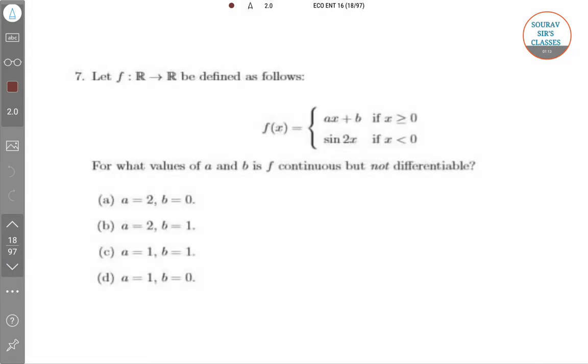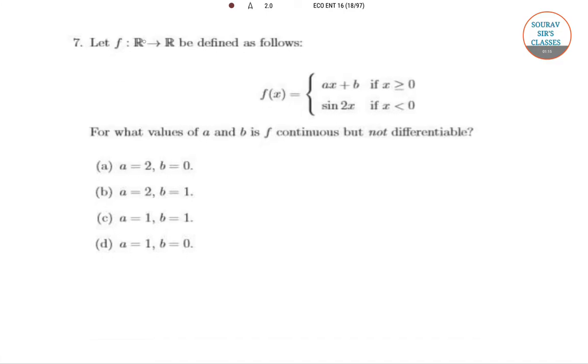This question says let f: R to R. What is the meaning? A function in the real plane defined as follows. In some questions you may see R2 to R3, meaning a linear or nonlinear transformation from 2 to 3 dimensions. But here it's a very structured formation of function.